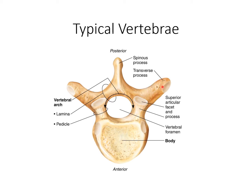These projections are called transverse processes. A process is nothing but a projection, so these are the transverse processes here, and this is the spinous process here. The part of the vertebra that connects the spinous process with the transverse process is called the lamina — one on each side — and the pedicles plus the lamina form this arch, which is appropriately called the vertebral arch.